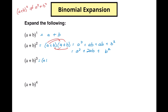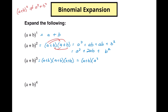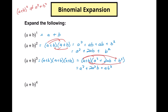Now what about a plus b cubed? That means we're taking three parentheses and multiplying them out. But we already know what two parentheses give us — that's right up here. So we take a plus b times a squared plus 2ab plus b squared. So a times a squared gives a cubed, a times 2ab gives 2a squared b, a times b squared gives ab squared. Then we do the same with b: b times a squared gives a squared b, b times 2ab gives 2ab squared, b times b squared gives b cubed.